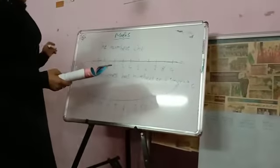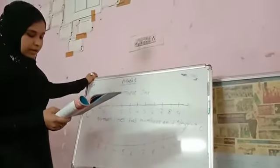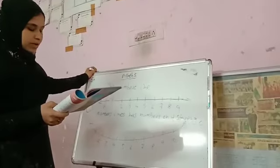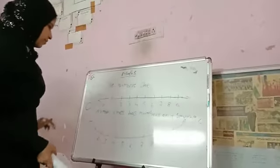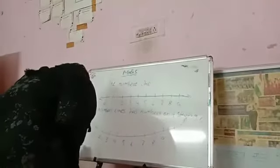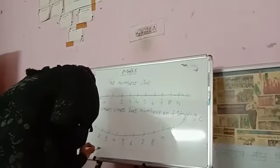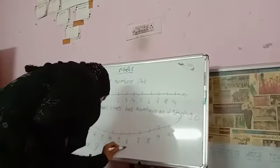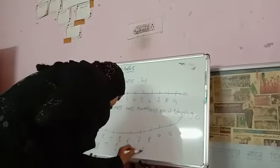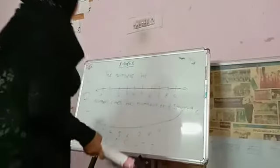When you move to your left on the number line, you will get a smaller number: ten, nine, eight, seven, six, five, four, three, two, one.